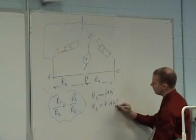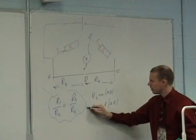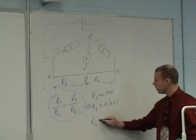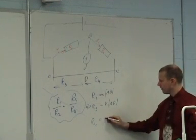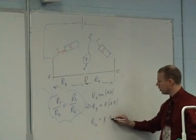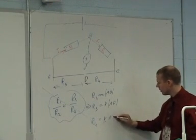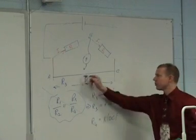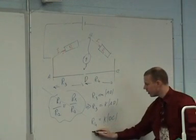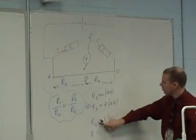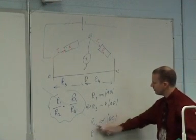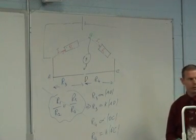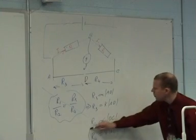It's equal to constant times the length AD, right? So that's what implies there. Now we come down to here, R4. What's the relationship between R4 and the length DC? It's also proportional. Will it be the same proportional constant? Oh yeah, because it's the same wire, we're just moving along the wire, so it's the same proportional constant. So R4 equals k times DC. I should have said it's proportional to DC, therefore R4 is equal to k times DC.